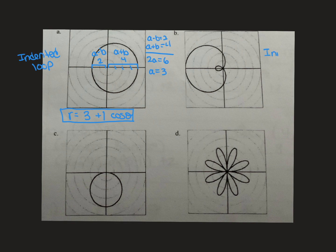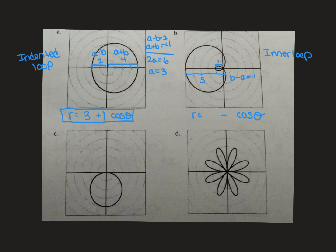Part B is an inner loop on the negative x-axis, so it uses cosine with a minus. The inner loop length is 1 and the total length is 5. The larger value B goes next to the trig function. Using B − A = 1 and B + A = 5, adding gives 2B = 6, so B = 3 and A = 2. The equation is r = 2 − 3cosθ.